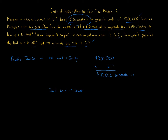Now we calculate the after-tax net income. We can subtract: $200,000 minus $42,000, or equivalently multiply $200,000 by 79% (0.79) — either way you get the same result. $200,000 minus $42,000 equals $158,000.